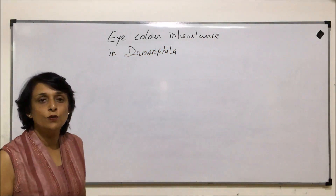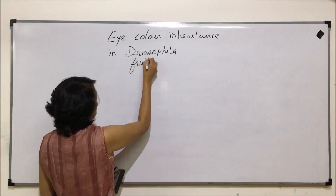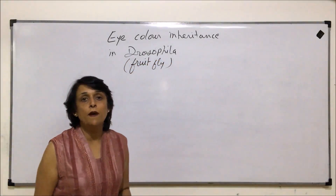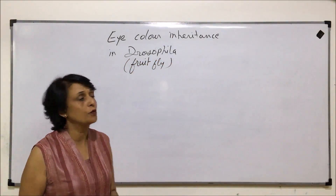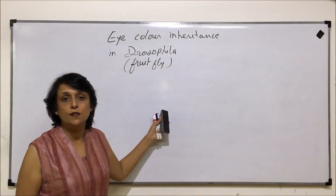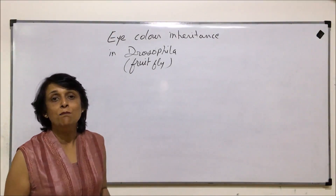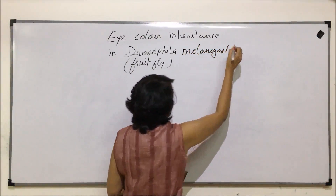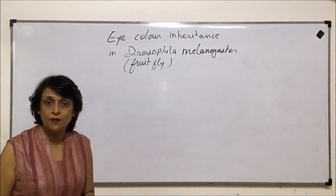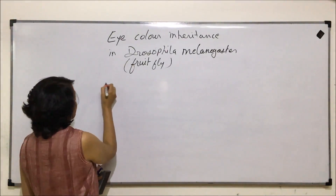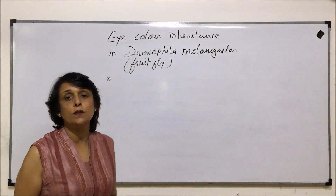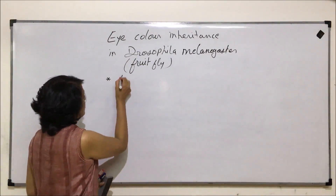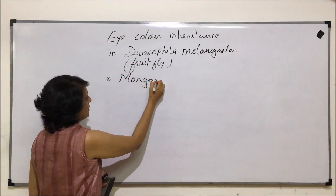Drosophila, commonly known as the fruit fly, is found hovering around ripened fruits. The full scientific name is Drosophila melanogaster. The scientist who worked on this Drosophila and eye color inheritance in Drosophila was Morgan.